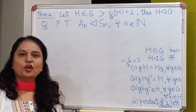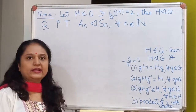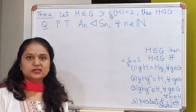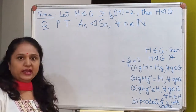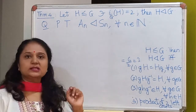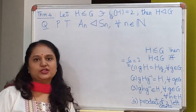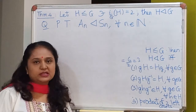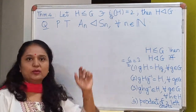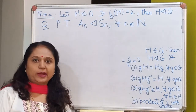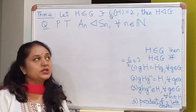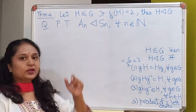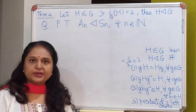Prove that An is a normal subgroup of Sn for all natural numbers n. Sn is the group of symmetries of a set containing n elements, and An is the set of all even permutations in Sn. If at this stage you do not recall what An and Sn are, go to the chapter on permutation groups and go through the videos quickly so that you can recall.